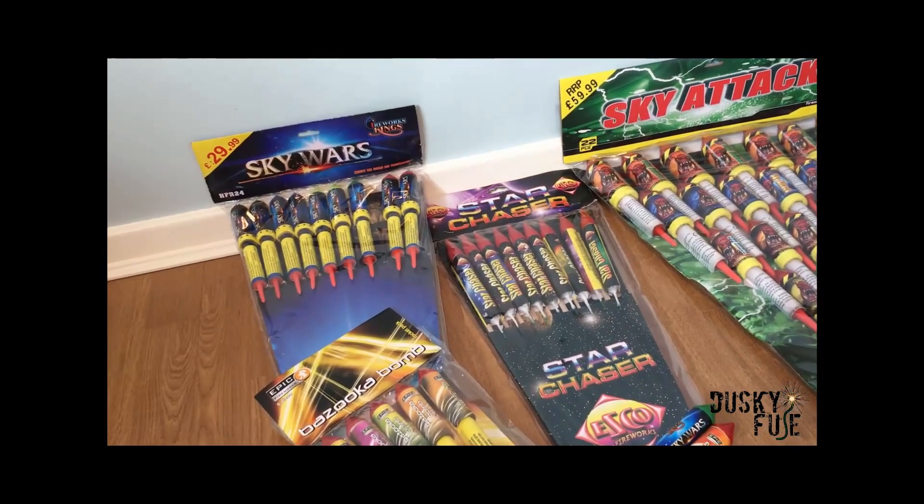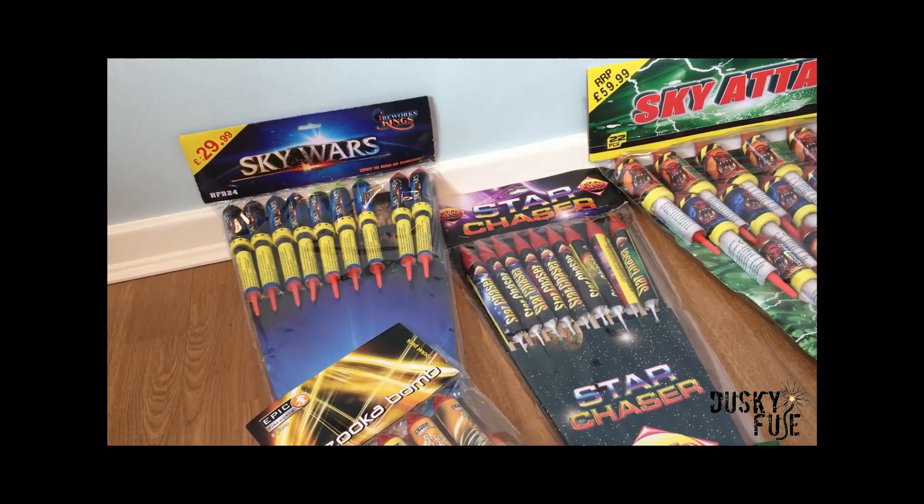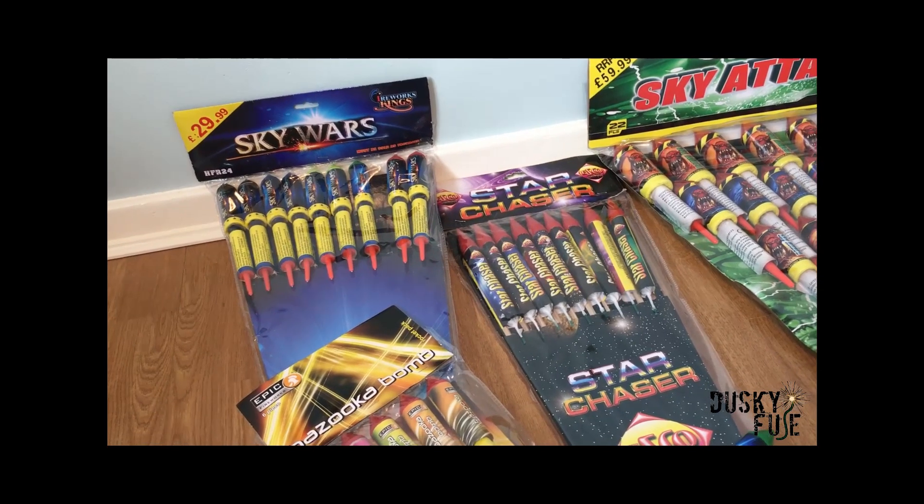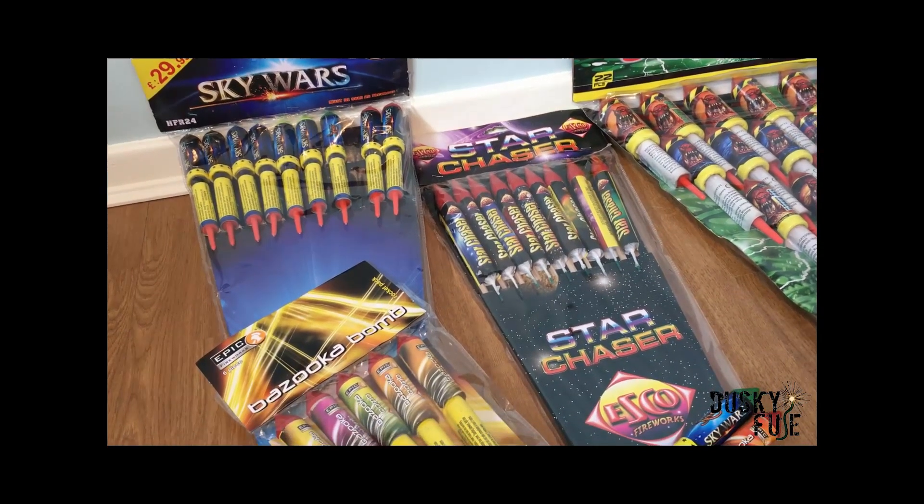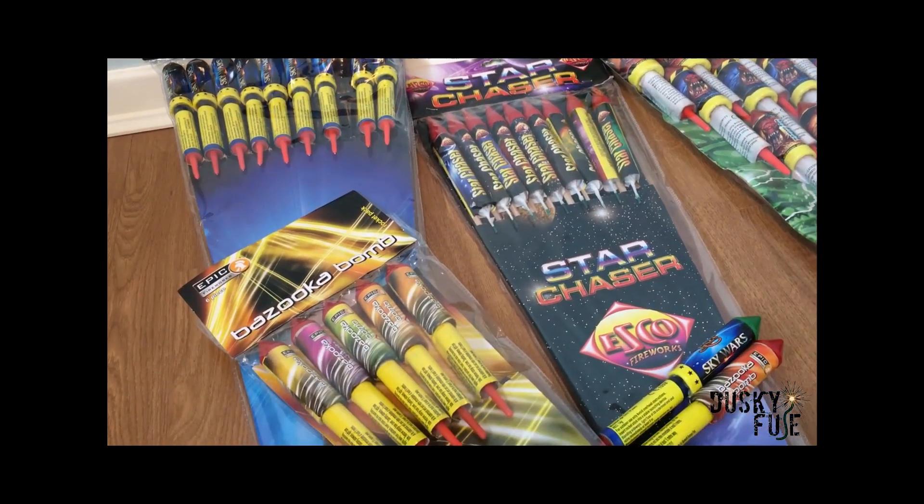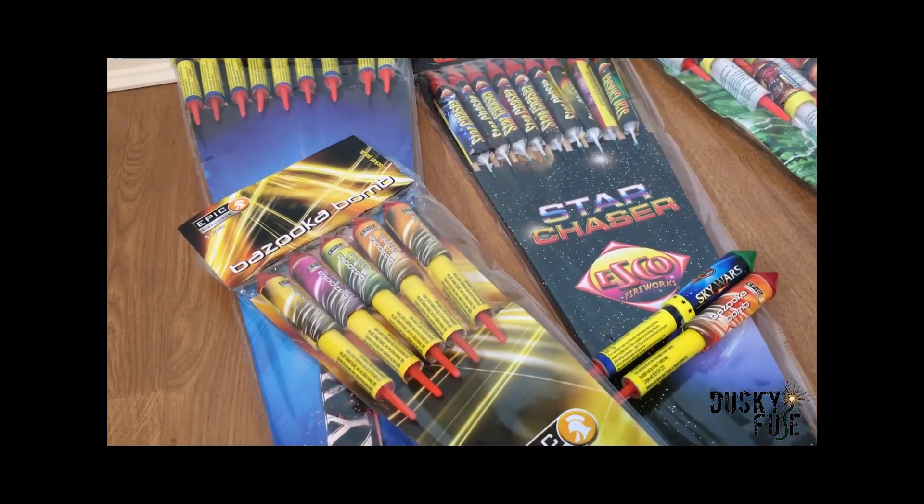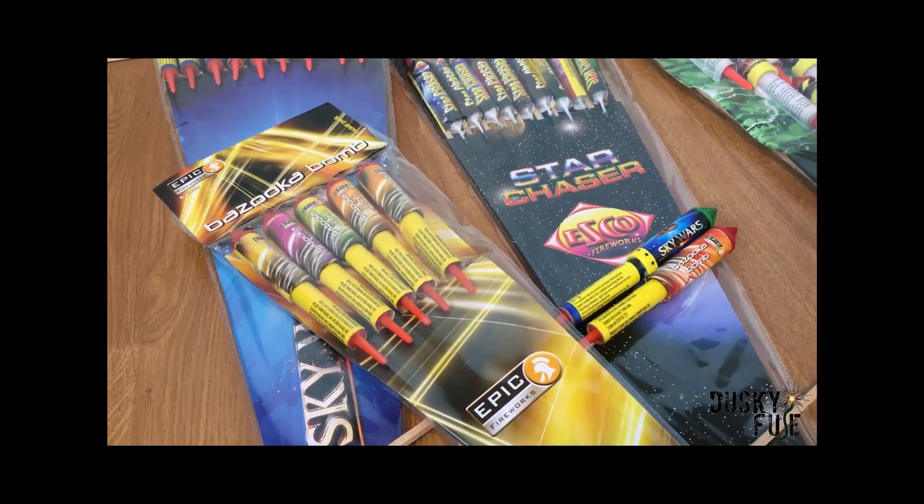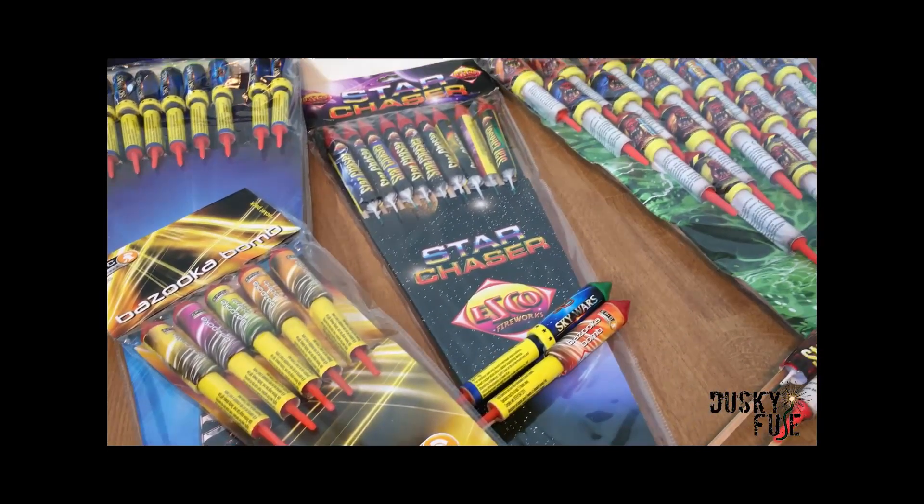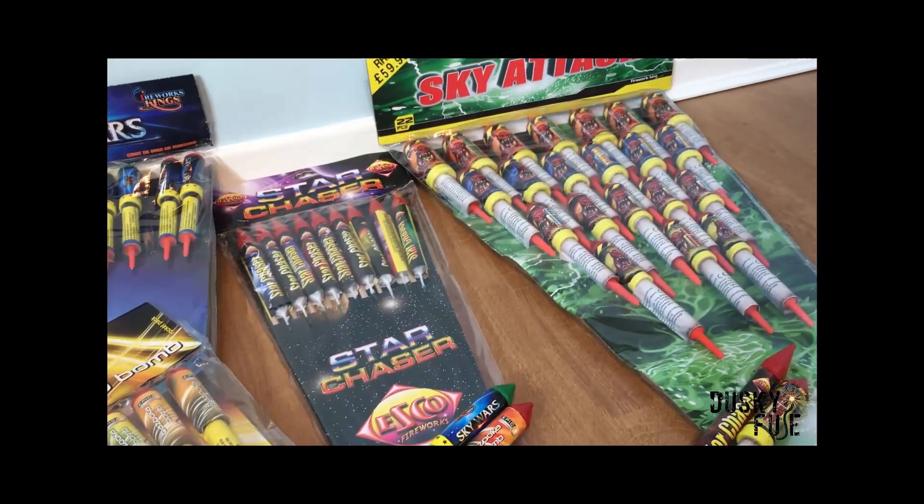To put it simply with regards to cakes and compounds, 1.4G is now considered on par with 1.3G. This is because after years of firework development, the effects and colours are now of the same standard. The only real difference is the bangs. 1.3G does tend to be louder.